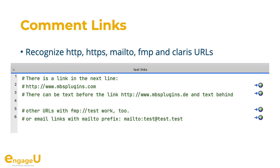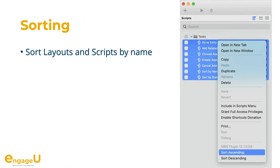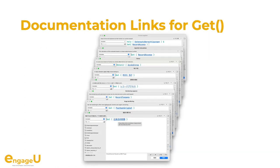The MBS plugin recognizes links within the script workspace and shows a little widget on the right to open the link. This allows you to directly link to wiki pages, documentation, or to trigger FMP URLs to do something right from the script workspace. Use the contextual menu to sort your scripts and layouts by name. For get functions in FileMaker we can link directly to the documentation to review the details — this works great in several languages.